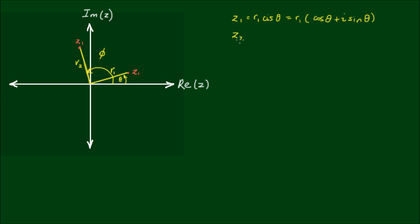So the polar form of z2 is equal to r2 cis φ, and again this is equal to r2 outside of cos φ plus i sin φ.